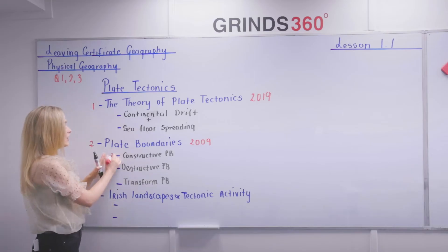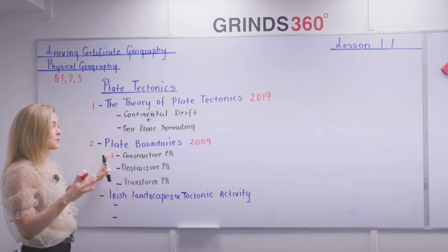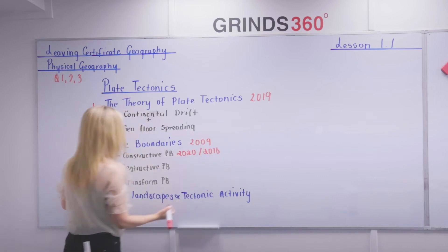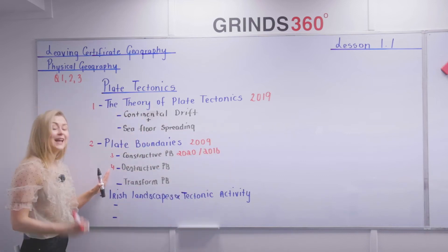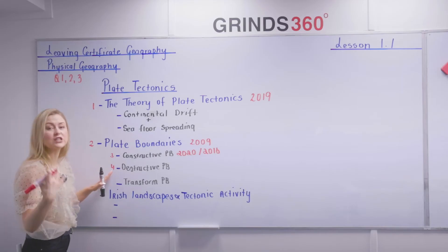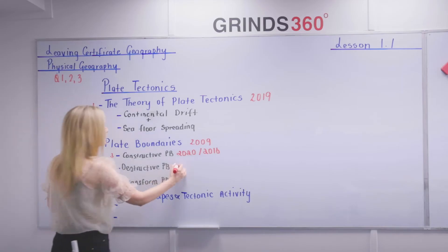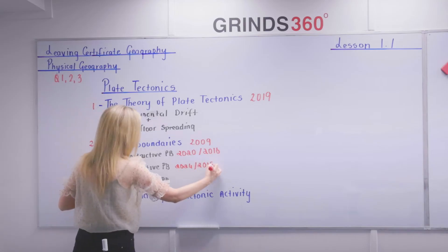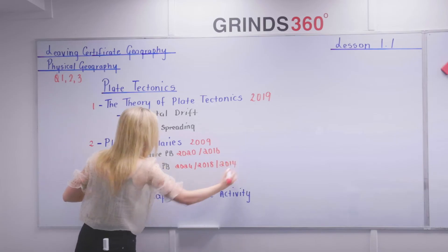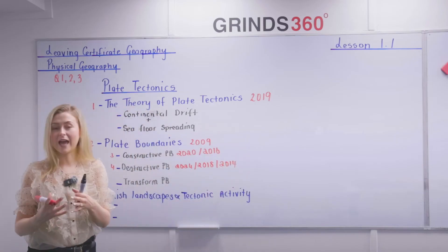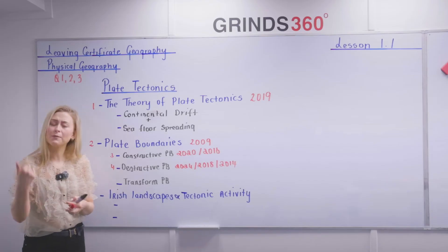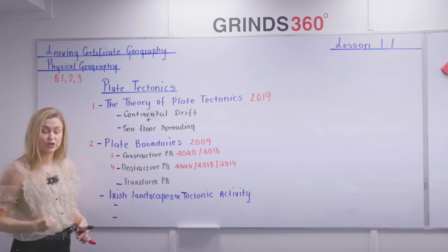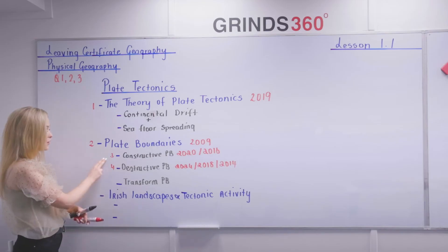Looking at more recent trends, the examiner is now focusing on a particular type of plate boundary. Essay number three is constructive plate boundaries on its own, which appeared in both 2020 and 2016. Essay number four is destructive plate boundaries, which appeared on the 2024, 2018, and 2014 papers. When we learn all three plate boundaries together, we then zone into constructive and destructive individually, adding detail but keeping the same structure.